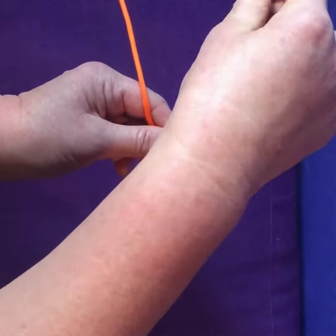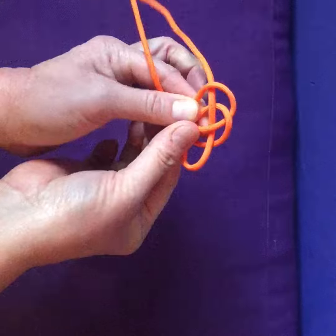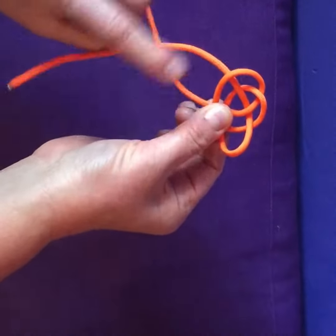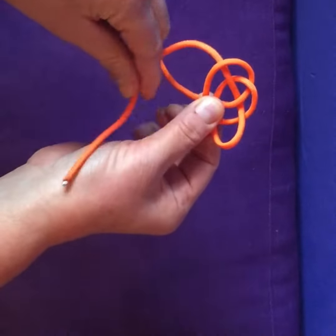Then you snug it up so you almost have a third loop here. Then you take this tail end over the origin of the line, and you're going to sew it through again, this time still working from right to left.